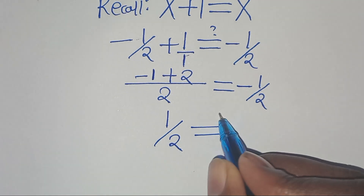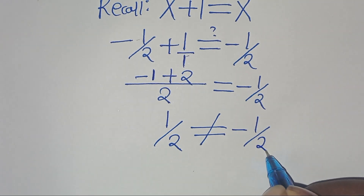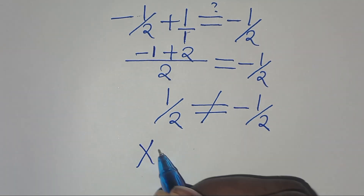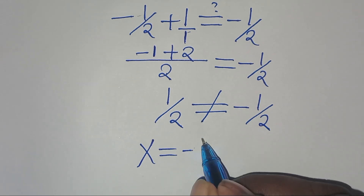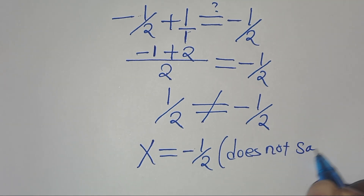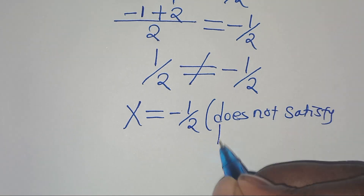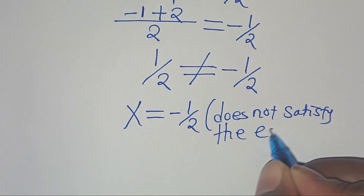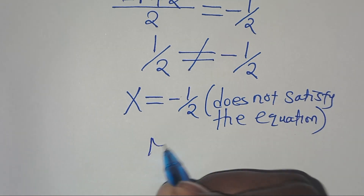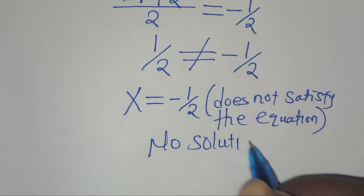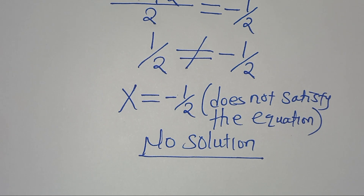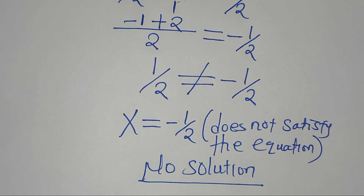And this is not equal to minus a half, which implies that x equal to minus a half does not satisfy the given equation. It does not satisfy the equation. The conclusion is that there is no solution to this algebra problem. Thank you for watching. If you have an alternative method, showcase it in the comment section.